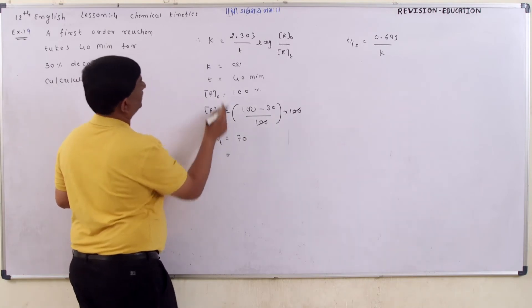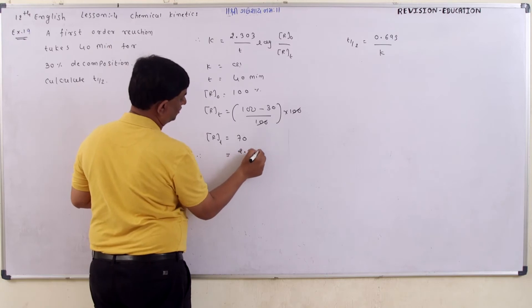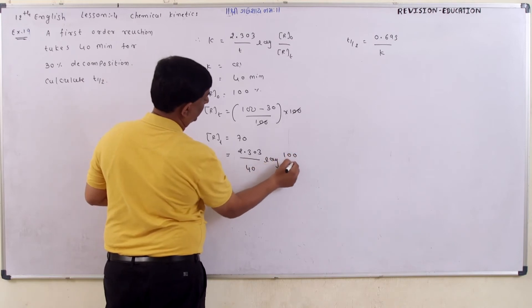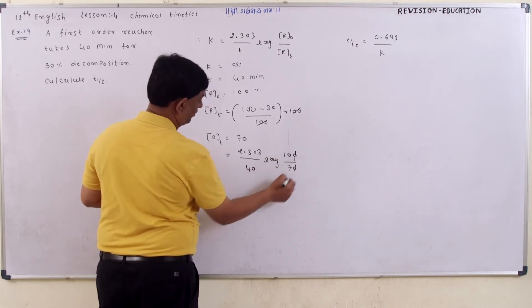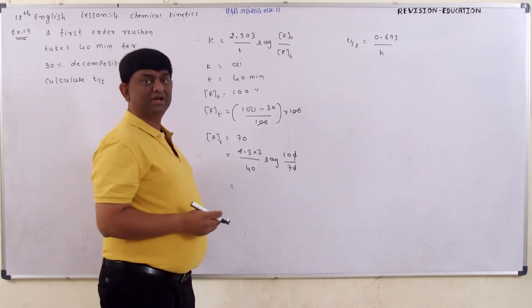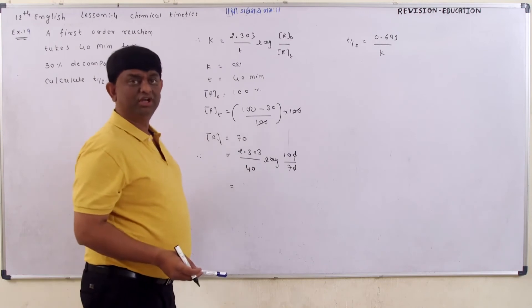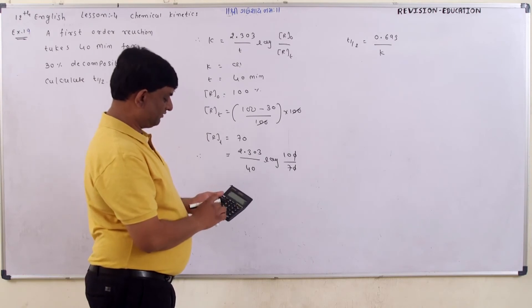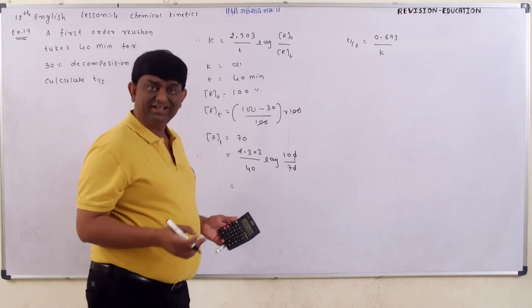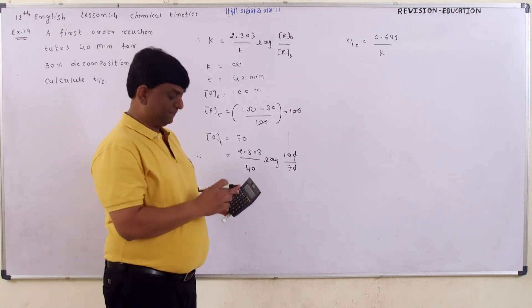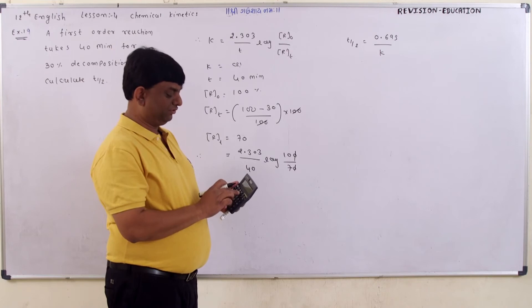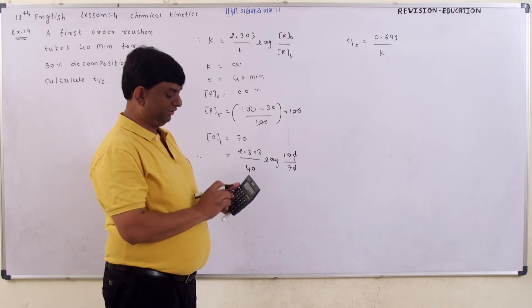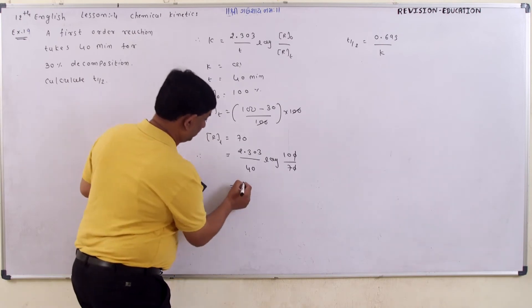So it becomes 2.303 divided by t value of 40, times log of 100 divided by 70. So it becomes 2.303 divided by 40 times 0.3558.